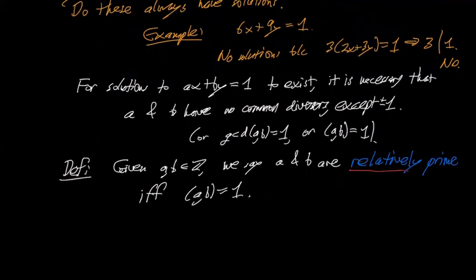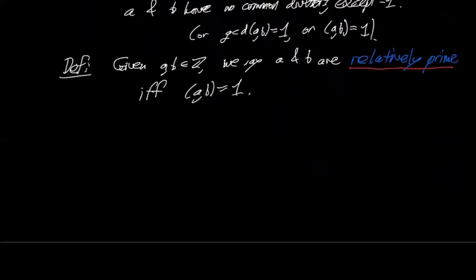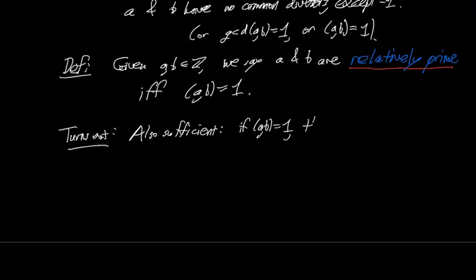Now, it turns out that that's a necessary condition. So basically, if ax plus by equals 1 has integer solutions x and y, then A and B have to be relatively prime. It turns out, and this is harder to prove, but I will try to give a proof later, it turns out this is also sufficient. That if A and B are relatively prime, then ax plus by equals 1 has solutions with x and y also in the integers.